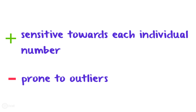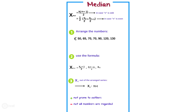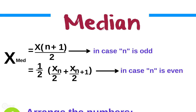Let's move on with the calculation of the median. The median is the value which takes the middle position in the set of numbers or the statistical series. The formula for calculating the median is: x̃ equals x subscript (n+1)/2 in case n is odd, and x̃ equals one half times (x subscript n/2 plus x subscript n/2+1) in case n is even. The first step is to arrange the individual numbers from smallest to largest.